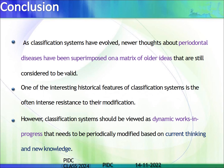To conclude: as classification systems have evolved, newer thoughts about periodontal disease have been superimposed on a matrix of older ideas that are still considered valid. One interesting historical feature is the intense resistance to modification of classification systems. However, classification systems should be viewed as dynamic works in progress that need to be periodically modified based on current thinking and knowledge. Thank you. For further doubts, please contact the Department of Periodontology.